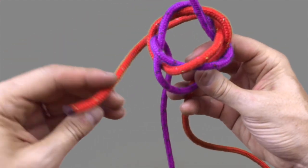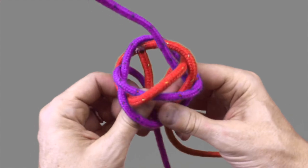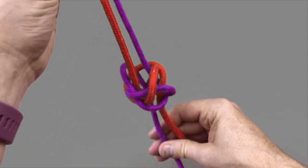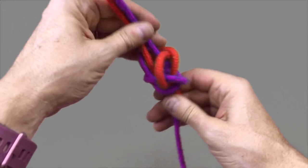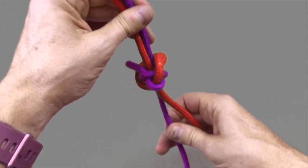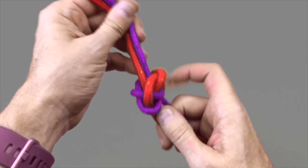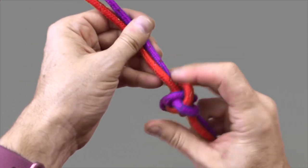Then take the red cord around the back in an anti-clockwise direction. Once again bringing it up through the central hole. Pulling both ends tight and slowly working the various parts of the knot to bring it into a ball.